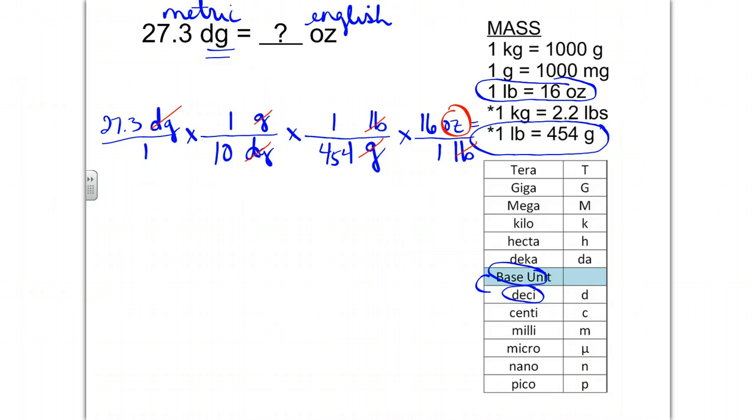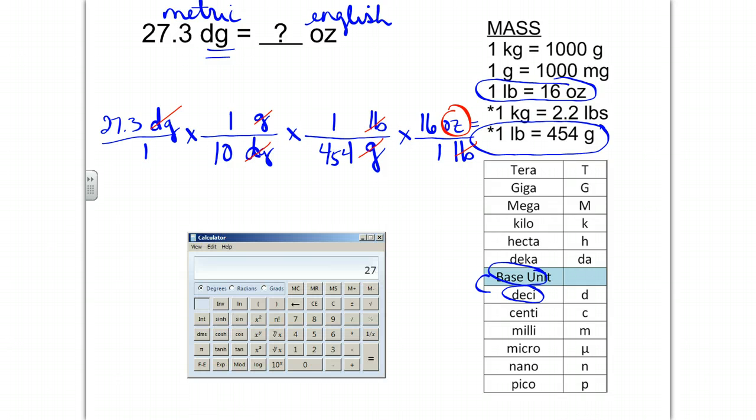So my final answer is going to be 27.3 divided by 10 divided by 454 times 16 equals 0.0962.